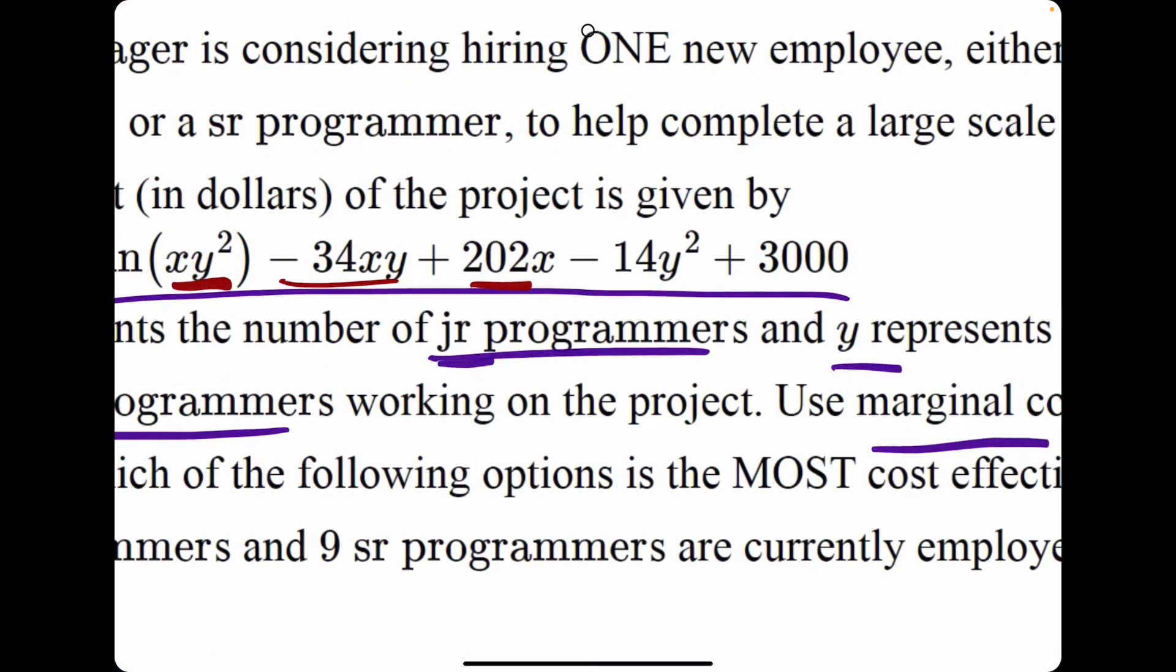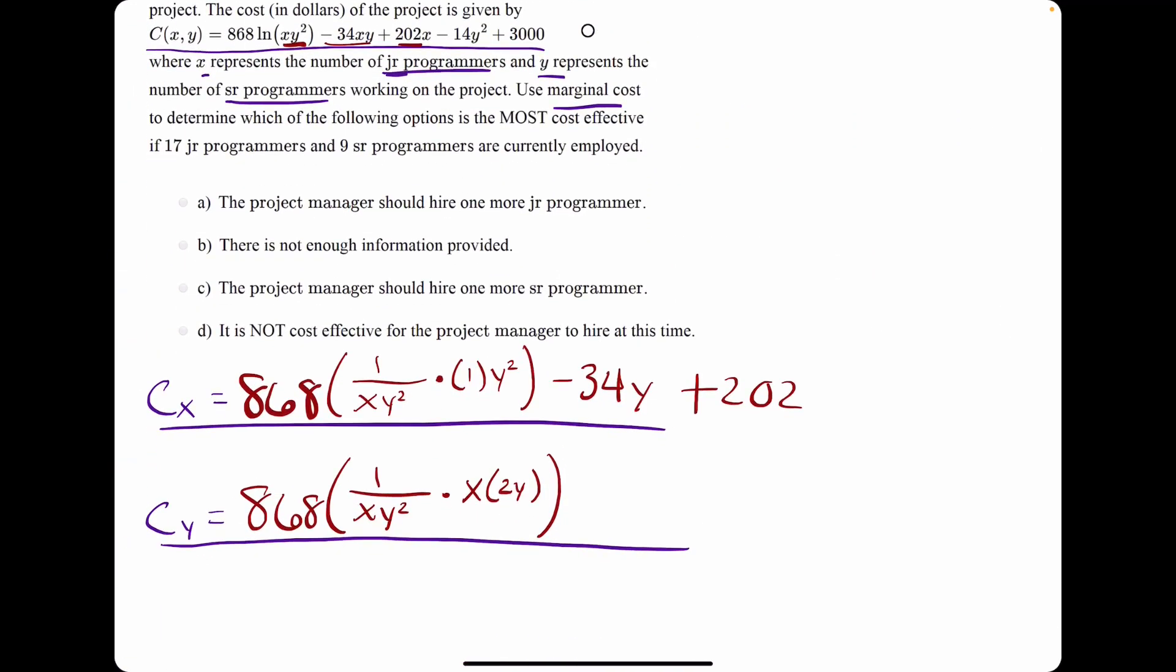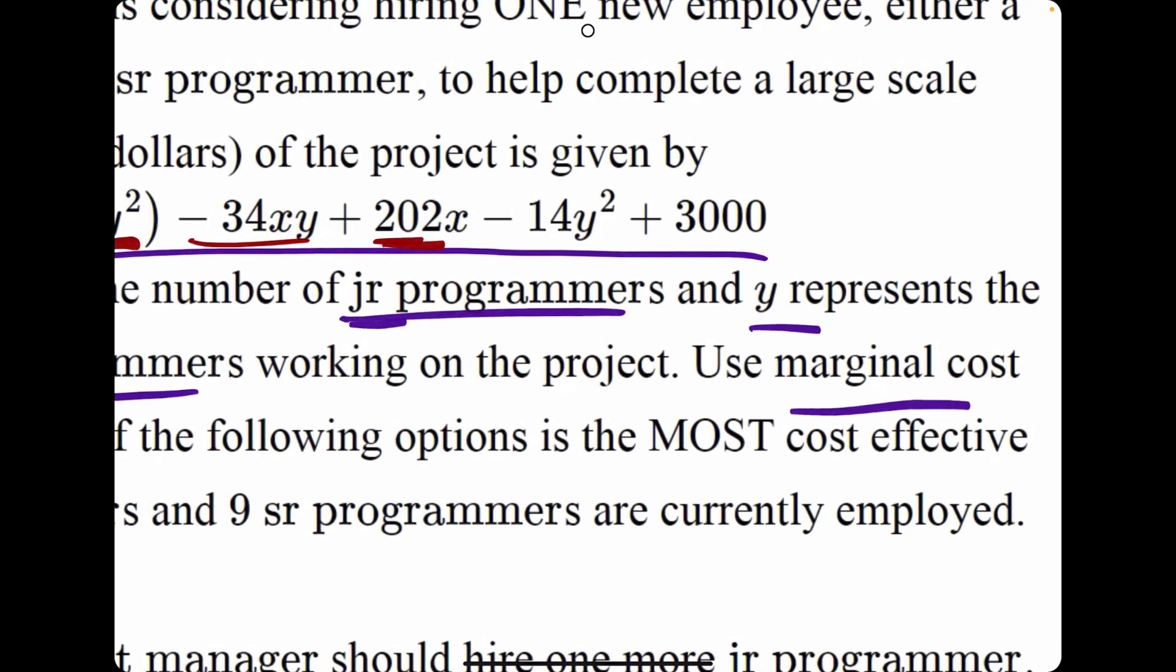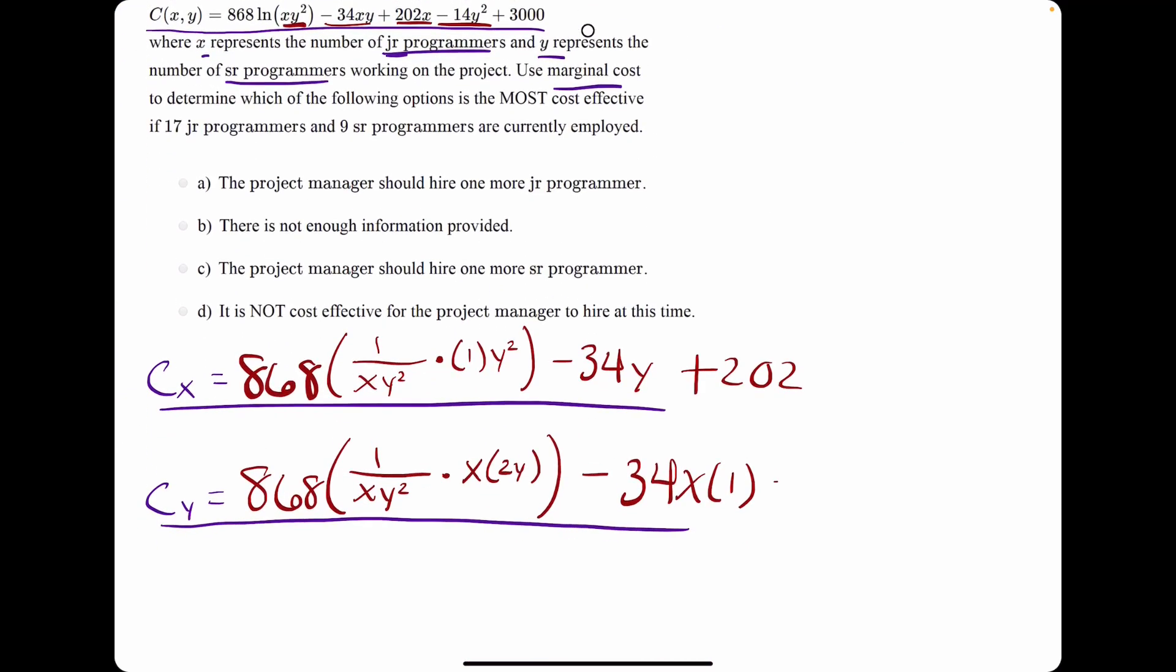Take the derivative of minus 34xy. The y term goes to 1, but the minus 34x gets carried along for the ride. The derivative of that y term was just 1. 202x has no y terms in it, so we're treating it as a constant, which has a derivative of 0. Then we move on to minus 14y squared. Take its derivative and we have minus 28y. And then plus 3000 goes to 0.